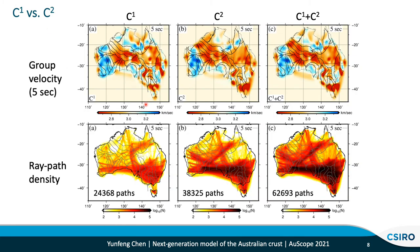Here we show a comparison of imaging results. The top row shows the group velocity at five seconds from C1, C2, and their combination, respectively. The bottom row shows the corresponding ray-path density plot. In general, the imaging results are quite similar because of the large dataset used in this study. However, the improvement is most significant in regions where C1 has relatively low data coverage. For example, in the circled area, the low-velocity structures are better recovered in the C2 result. The combined dataset has much higher data coverage, and the inversion results from the combined dataset include details from both individual images.